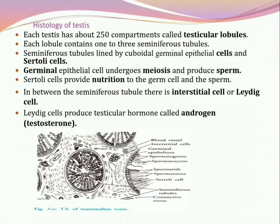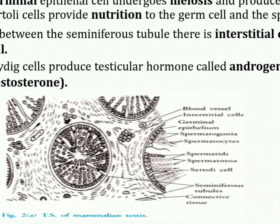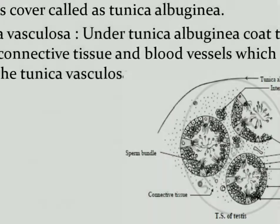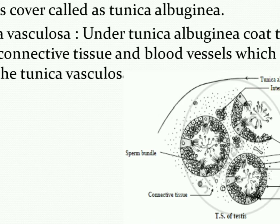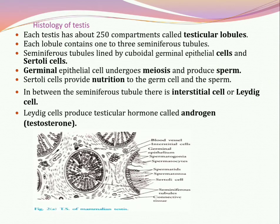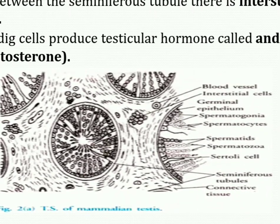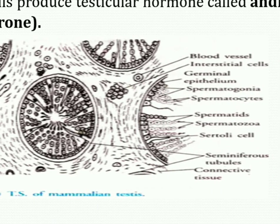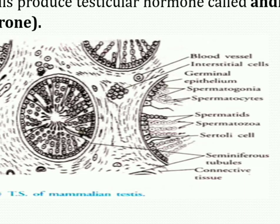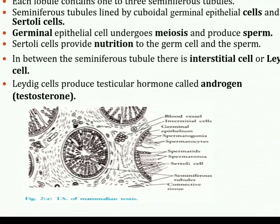Internally, each testis has 250 compartments called testicular lobules. Each lobule consists of three seminiferous tubules, which we can observe in the diagram. Each seminiferous tubule is lined by cuboidal epithelial cells, which are interrupted by many pyramid-shaped Sertoli cells.